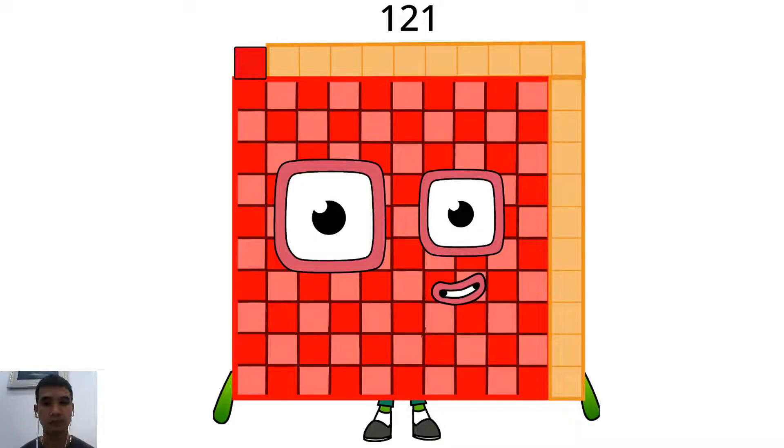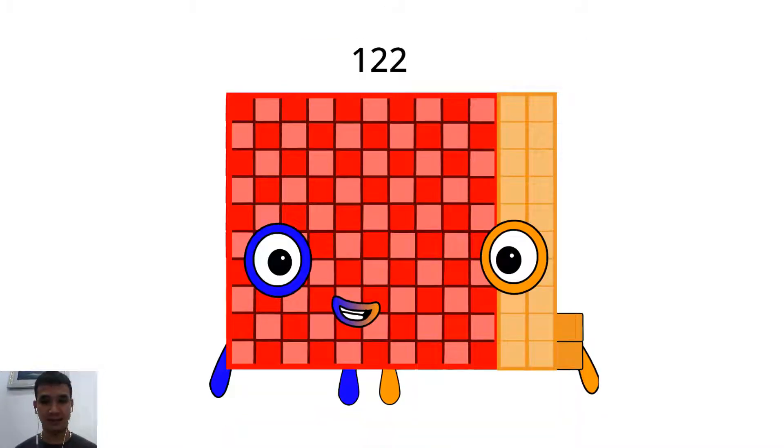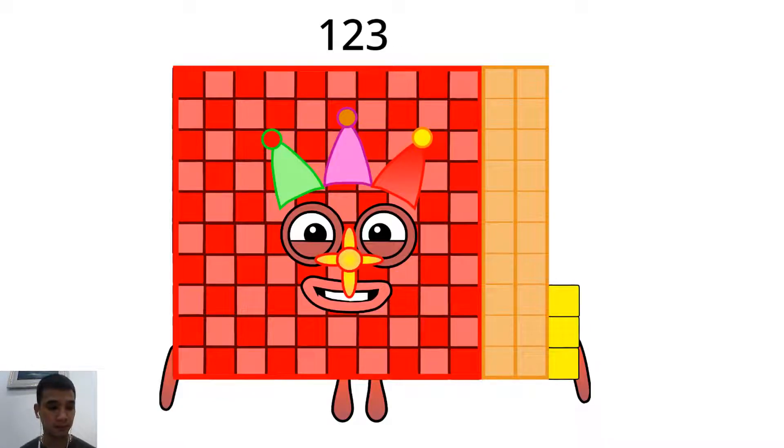Hello. I'm a square. I am number 122. Hello, 123. I'm a double 61, and I'm a shape.